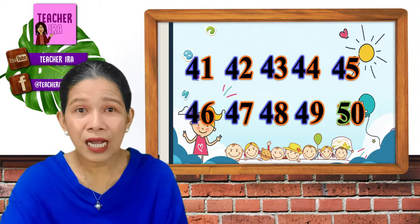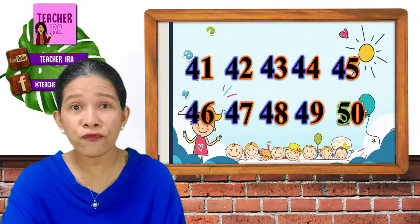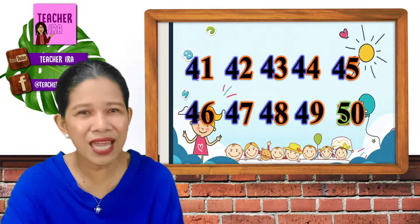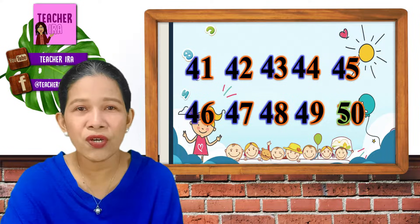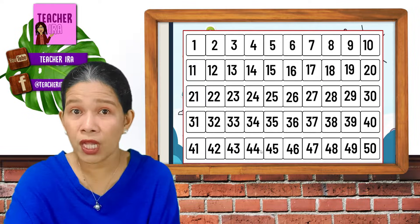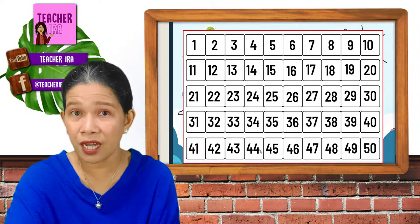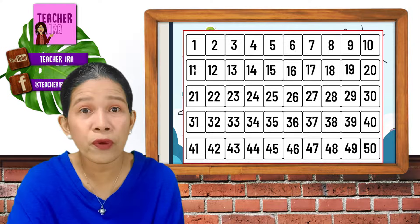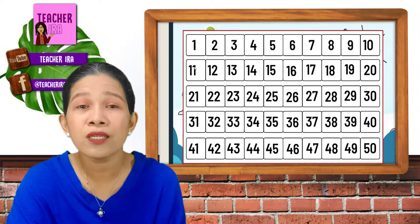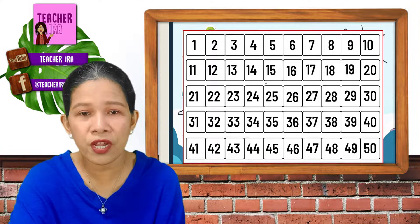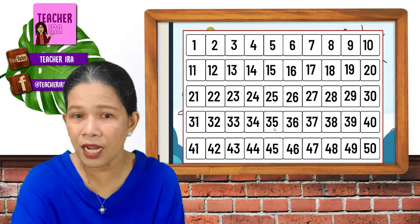Wow! Counting up to 50 became so easy. Look at this chart. If you would notice, this is what we had just done a while ago. So, numbers 1 to 10 were repeated so many times: 1, 2, 3, 4, 5, 6, 7, 8, 9, 10.